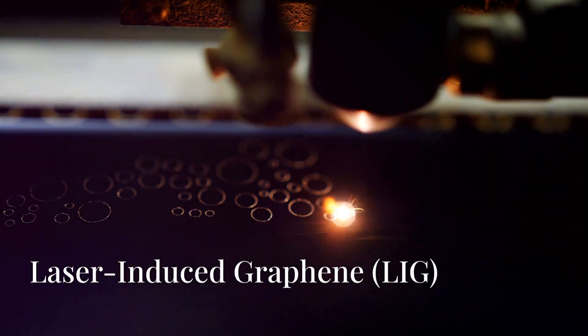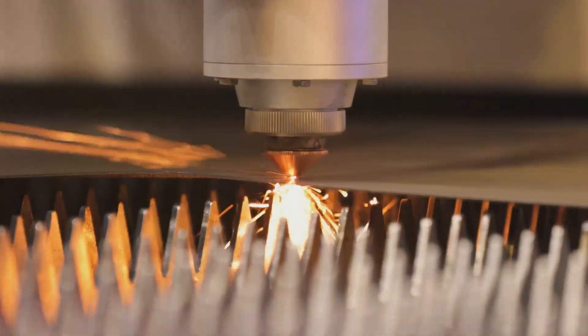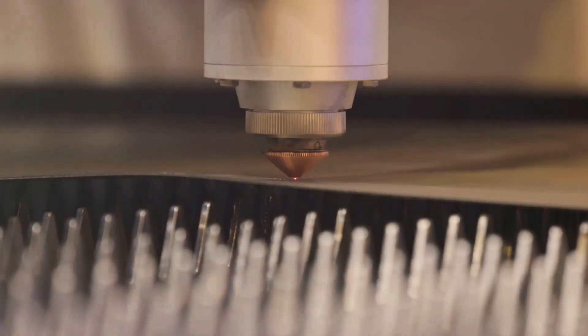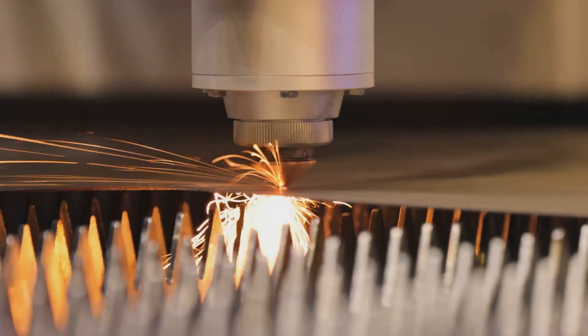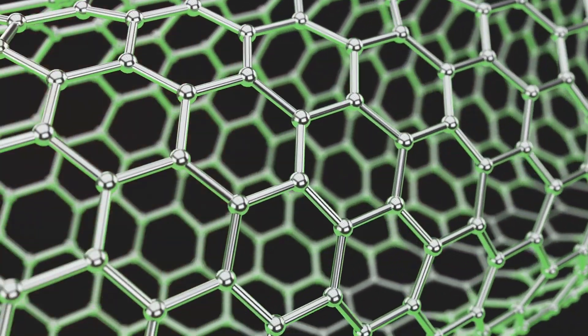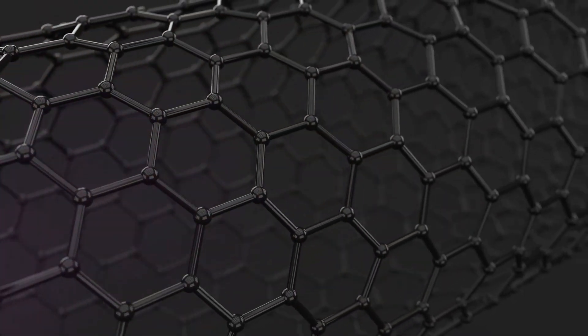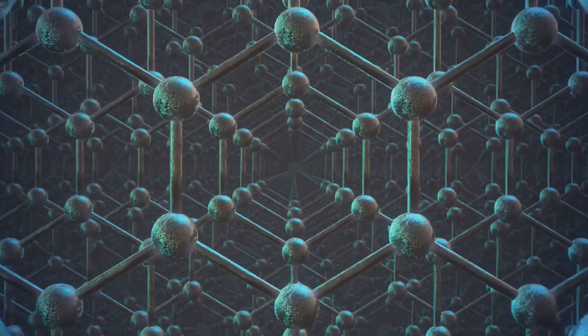Now let's connect this to a fascinating development in graphene technology: laser-induced graphene. LIG is a novel material created through a straightforward one-step laser process that uses a CO2 laser to convert carbon-rich precursors into a three-dimensional porous graphene structure in ambient conditions. This technique has gained traction due to LIG's remarkable properties, which inherit the benefits of graphene while also being mechanically flexible and cost-effective to produce.